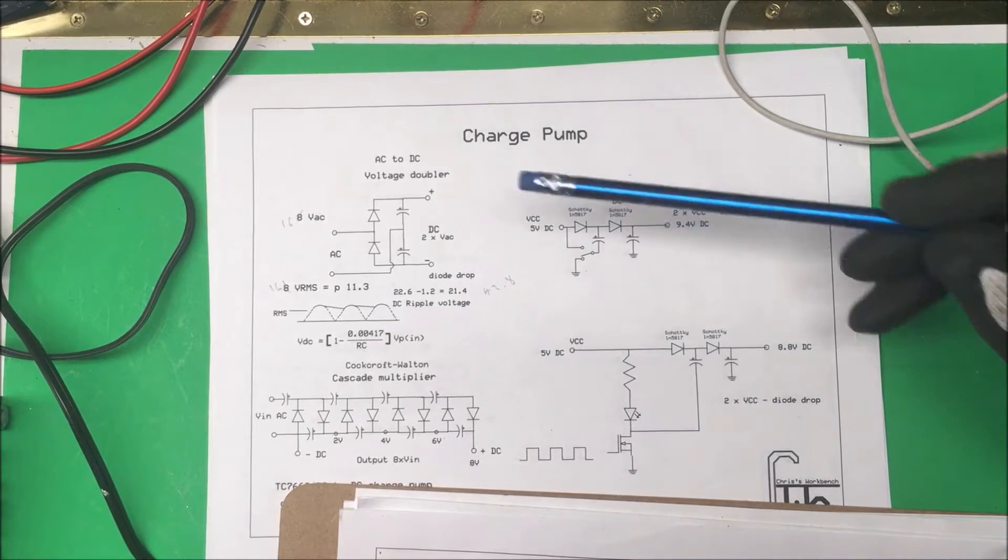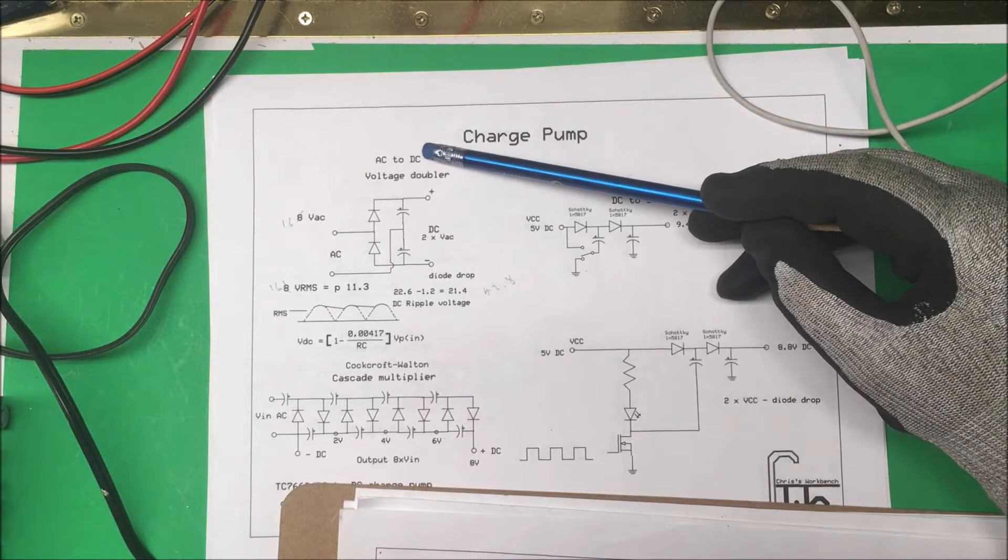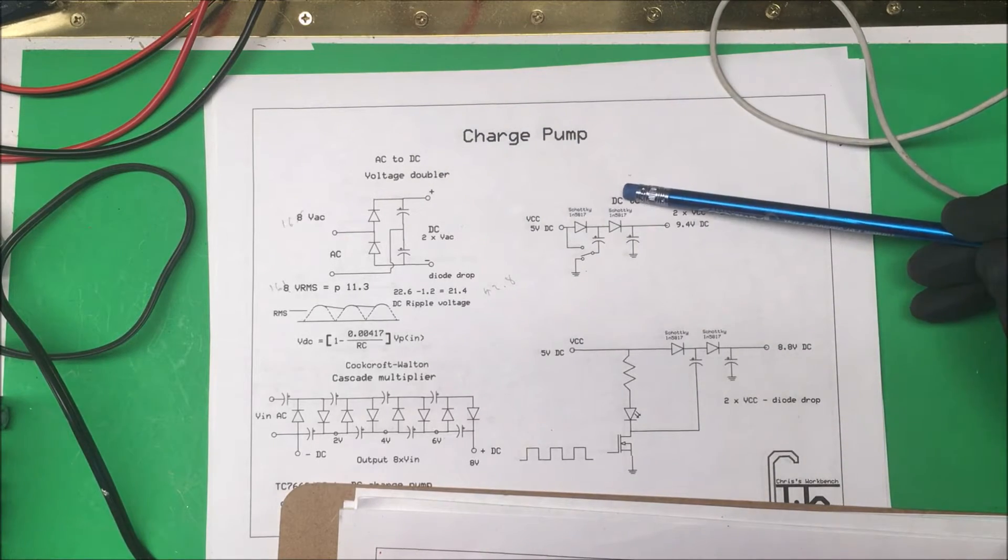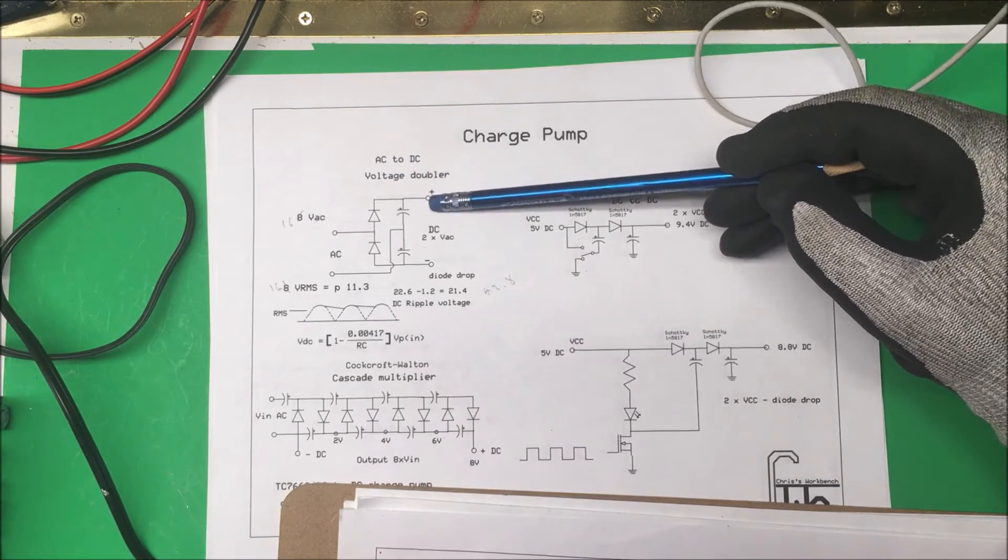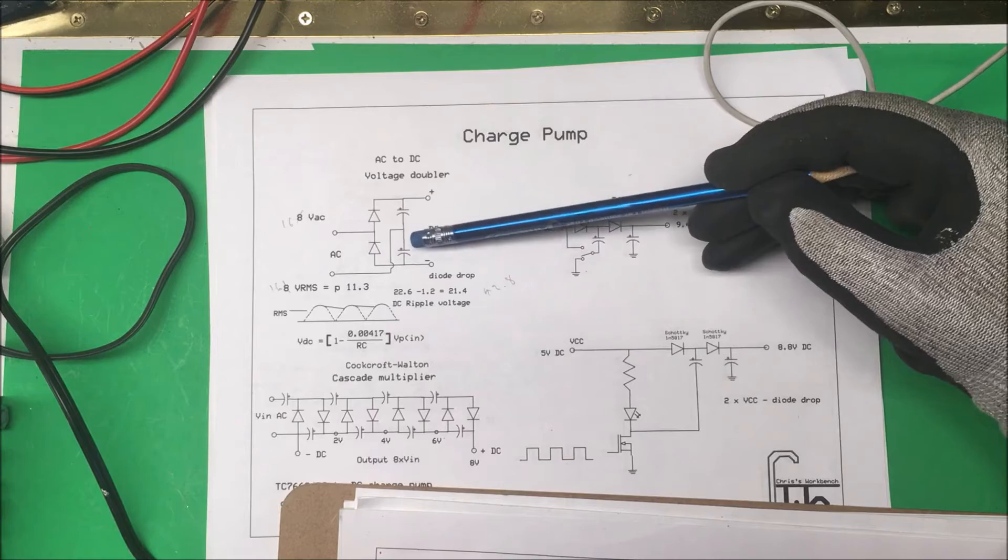Let's take a look at a charge pump. I put together an AC-DC charge pump and a DC-DC charge pump. This AC charge pump here is a voltage doubler. It's got two diodes and two capacitors.